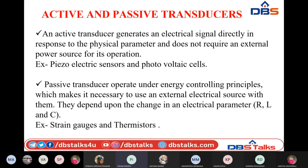Any active transducer converts physical parameters into equivalent electrical parameters such as voltage and current. Examples of active transducers are piezoelectric sensors and photovoltaic cells. Piezoelectric sensors convert pressure into equivalent voltage, and photovoltaic cells convert luminous intensity — that is light — into electrical voltage. This is the function of piezoelectric sensors and photovoltaic cells.